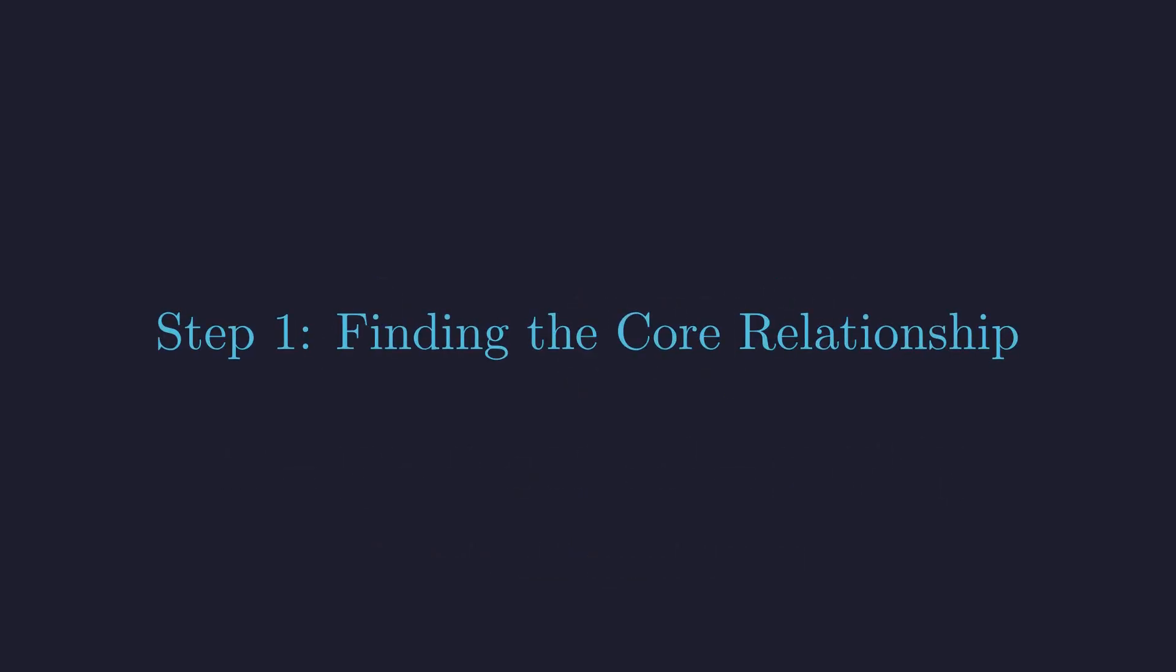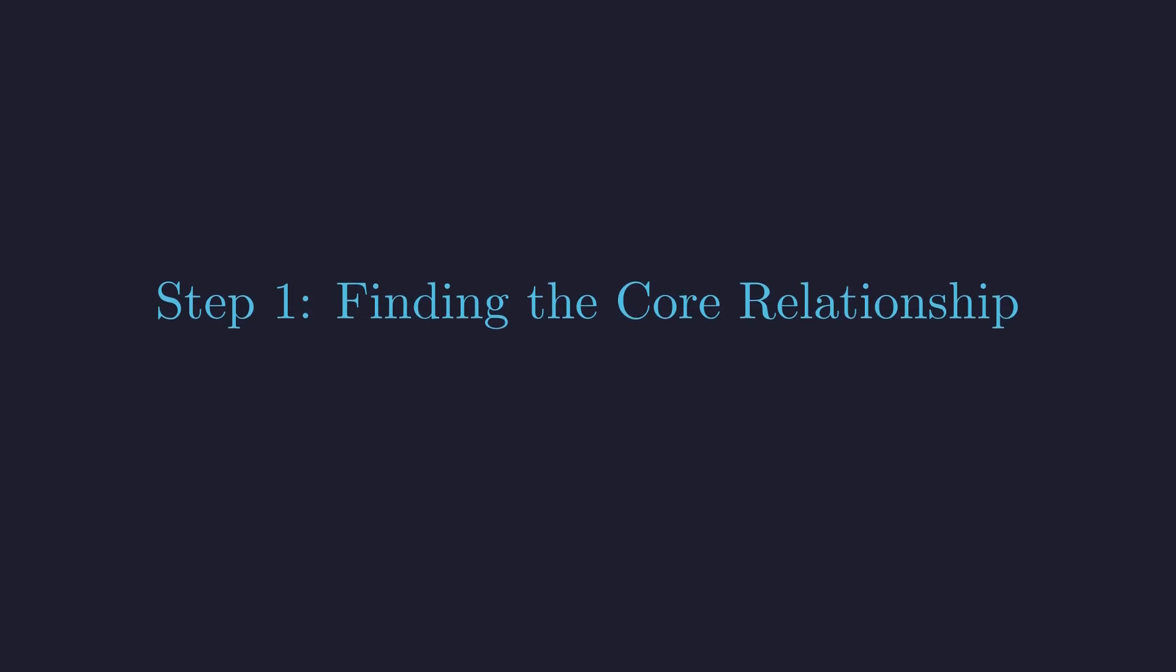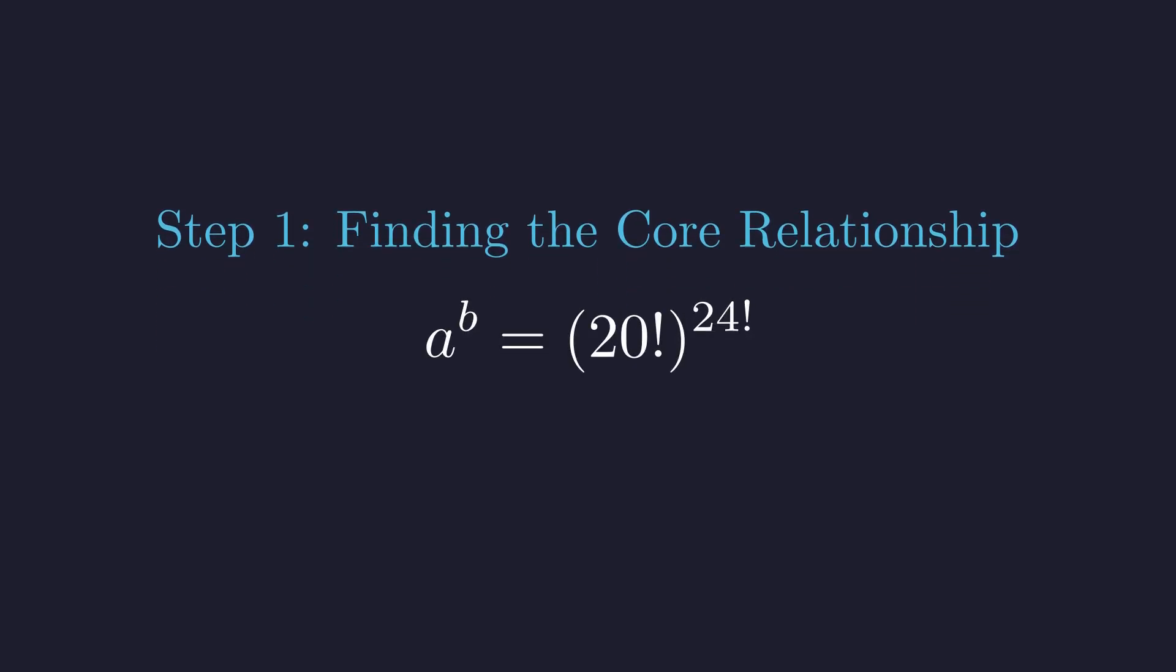Whenever I see an equation like this, I like to think about what's really constraining these variables. What's the fundamental relationship that A and B must satisfy? Let's isolate by taking the B-th root of both sides. This is where the structure starts to reveal itself. What we're doing here is peeling back the layers to see how A depends on B.